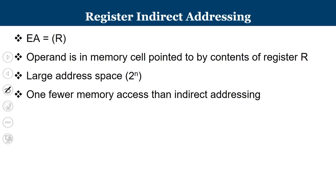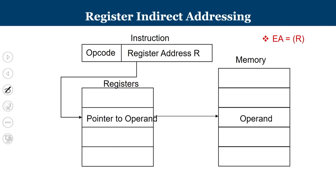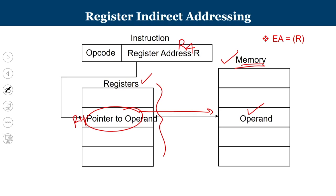In register indirect addressing mode, the operand is in the memory cell pointed to by the contents of register R — effective address equals contents of R. The real operand is in memory, but the memory address is kept inside a register and the register name is given. This allows a larger address space. For example, if R4 is specified: go to R4, extract its contents — that is a memory address — then go to that memory location to find the operand. One register access plus one memory access is required.